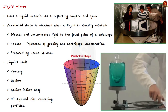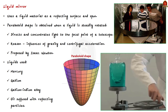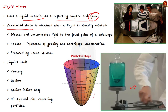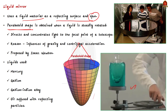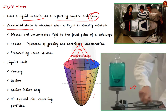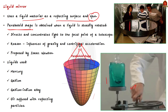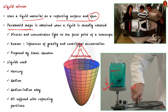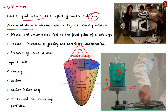As the name suggests, this telescope has a liquid mirror. A liquid mirror is the one that uses a liquid material as a reflecting surface when it is spun. This is based on the principle that when a liquid is steadily rotated, its surface would take up a paraboloid shape. A perfect paraboloid directs and concentrates light to a focal point of a telescope. This happens due to the influence of gravity and centrifugal acceleration.